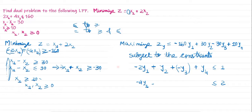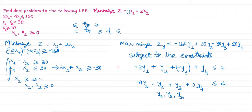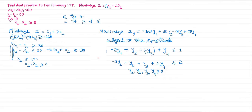The second dual constraint uses coefficients of x2, which are minus 4, minus 1, 1, and 0, corresponding to y1, y2, y3, and y4. So the second dual constraint is: minus 4y1 minus y2 plus y3 plus 0·y4 less than or equal to 2. And the non-negativity conditions are y1, y2, y3, y4 greater than or equal to 0.